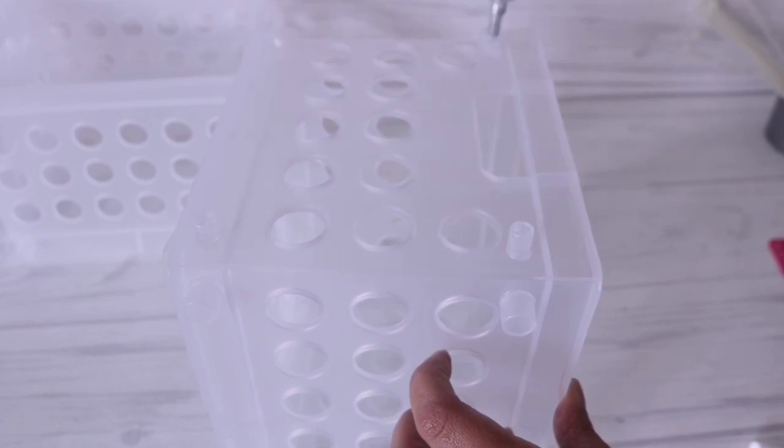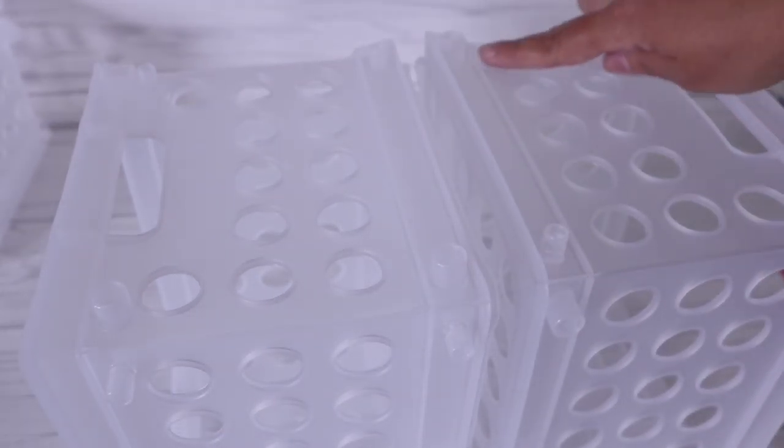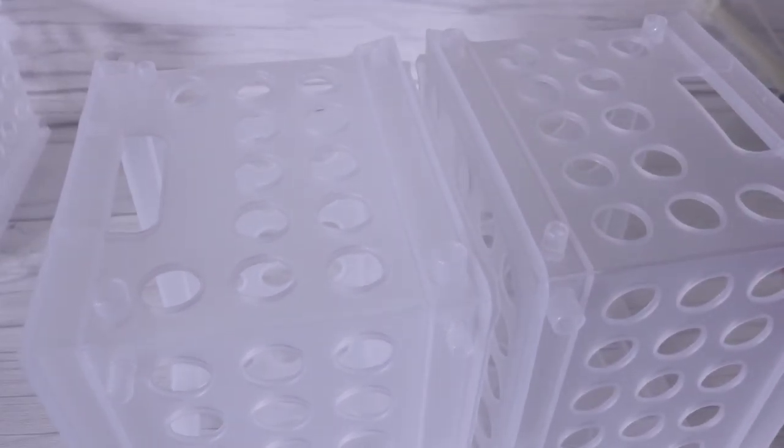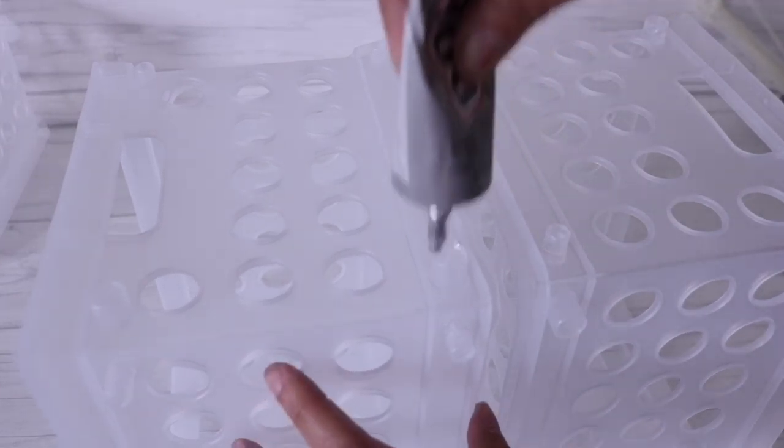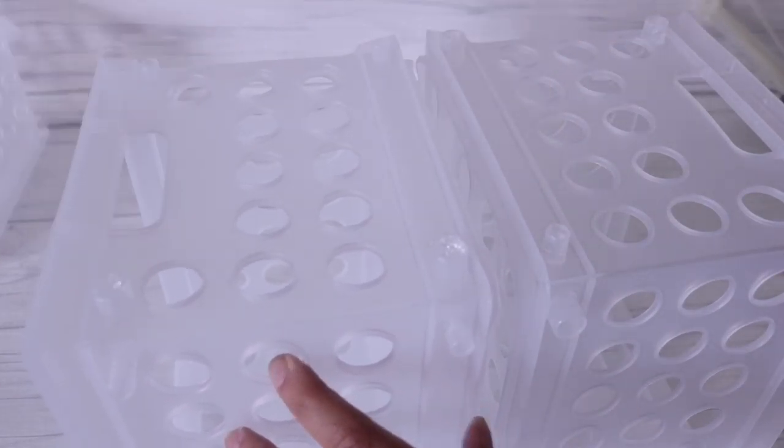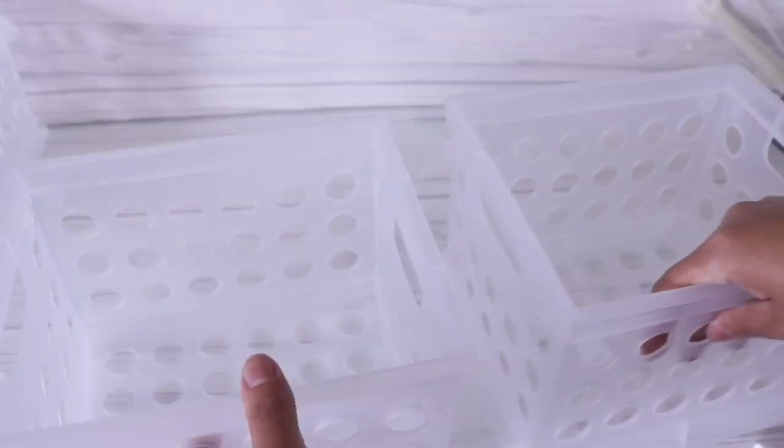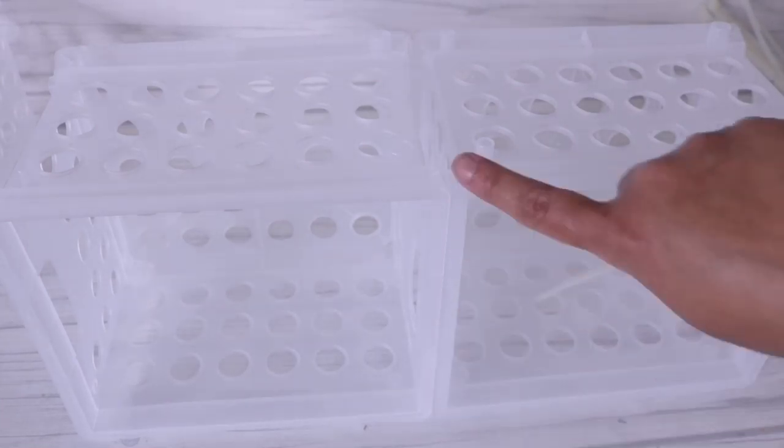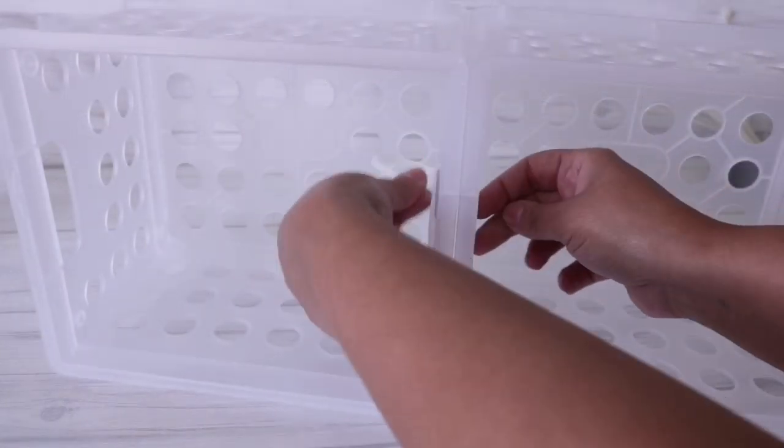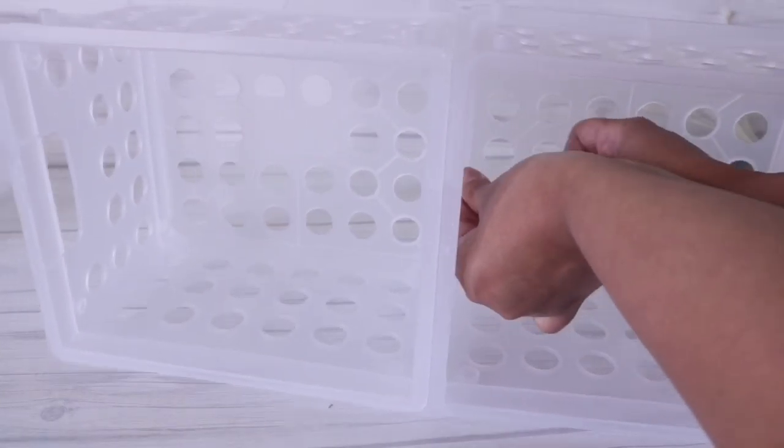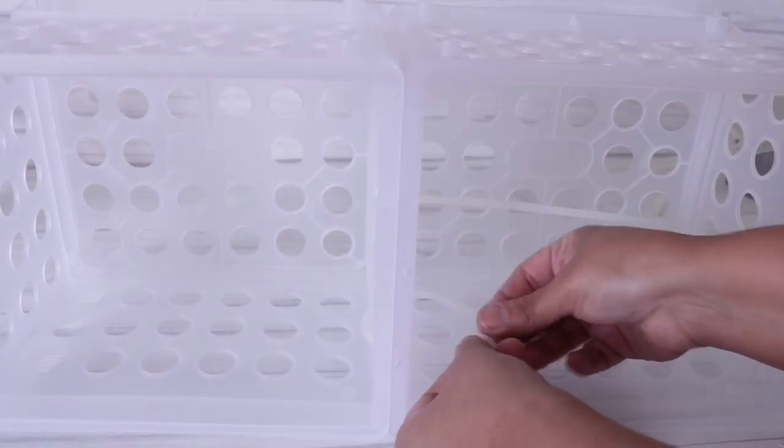For the first crate I went ahead and put E6000 in all of the holes and then I realized that I probably should just put them into the larger hole of each crate. That way the glue surrounds the smaller one and they attach. But you could go ahead and add glue to all of the holes if you feel more comfortable. I was just trying to save a little bit of glue because in my last tutorial with the old crates you would literally have to use an entire tube of E6000 since there were so many openings.